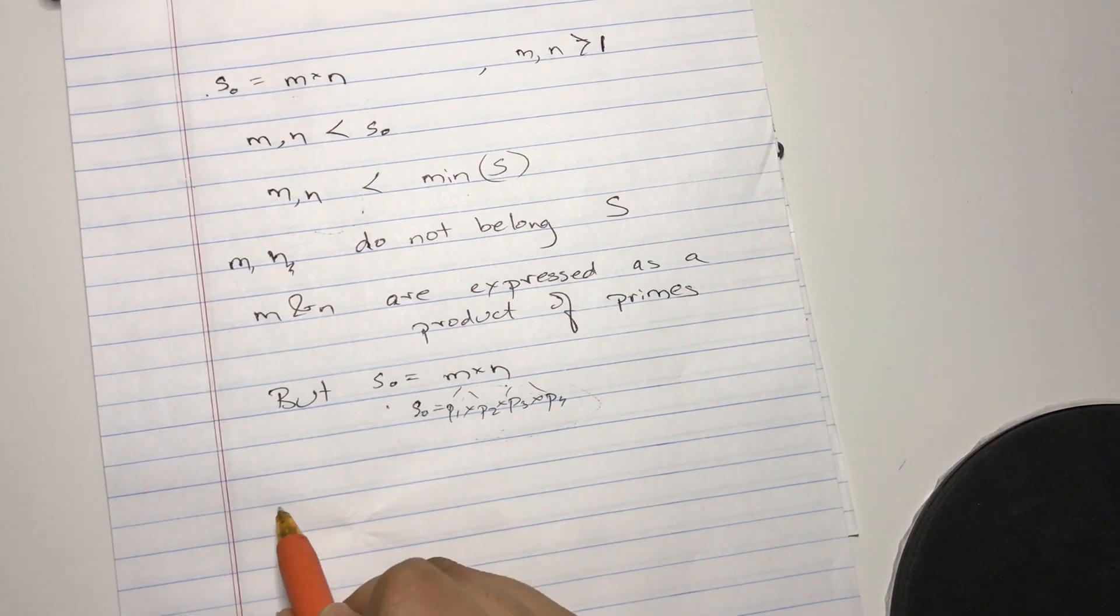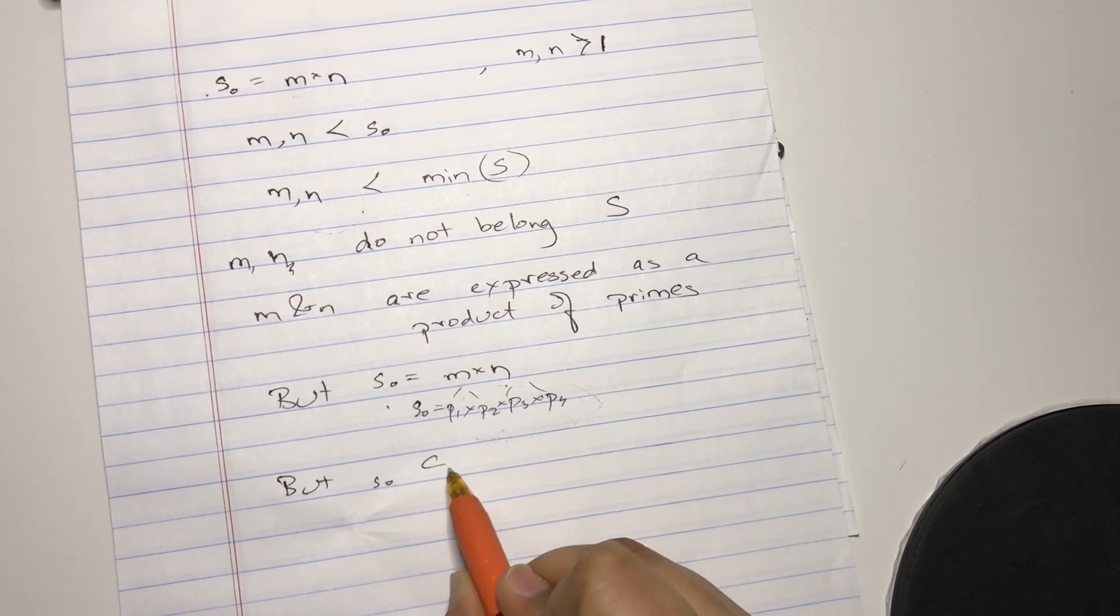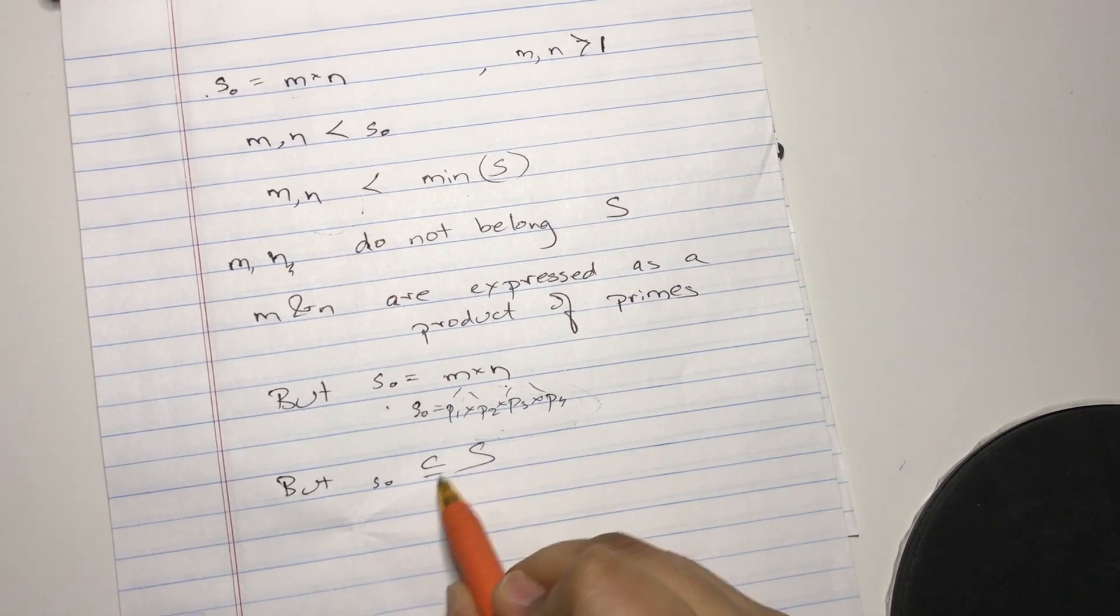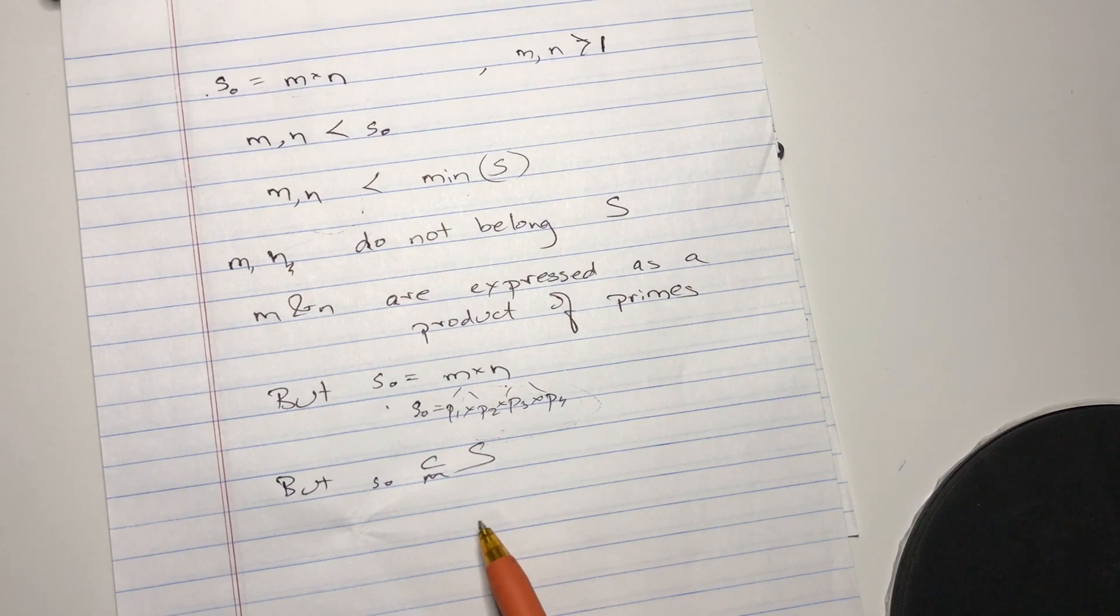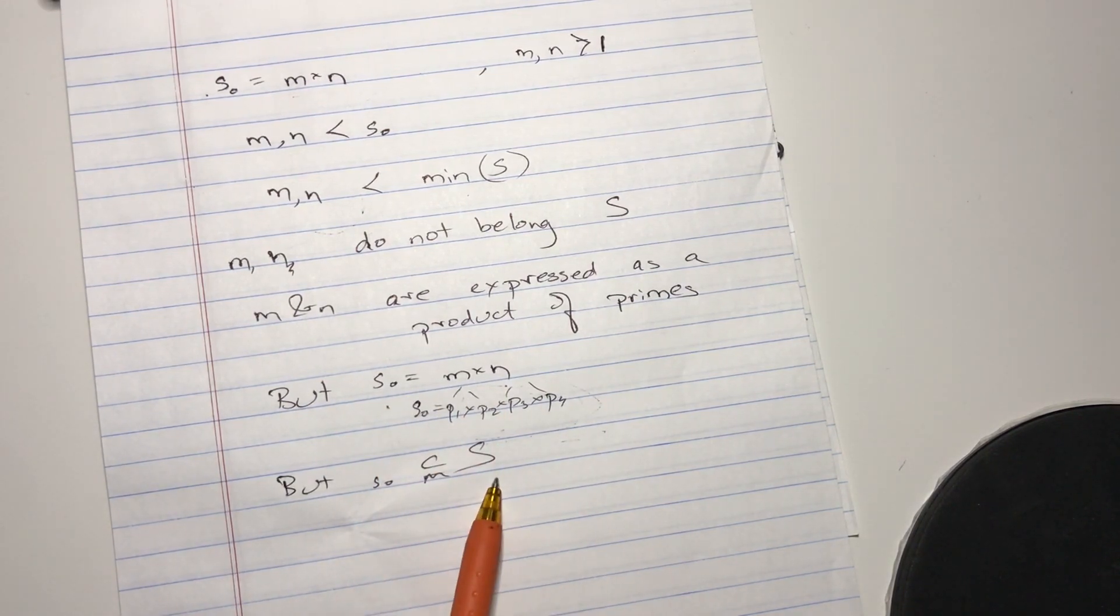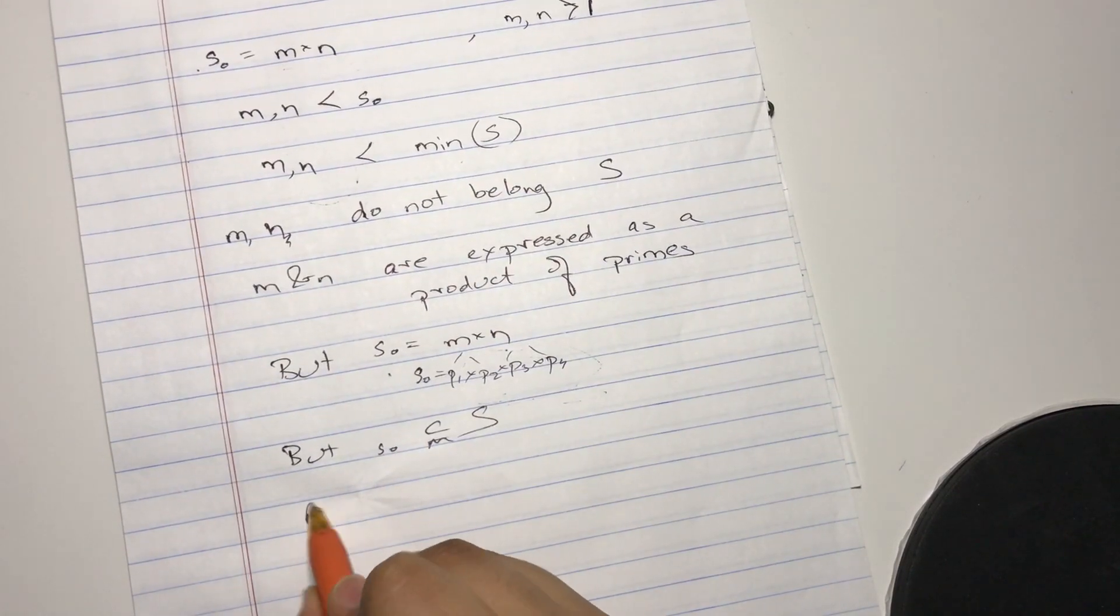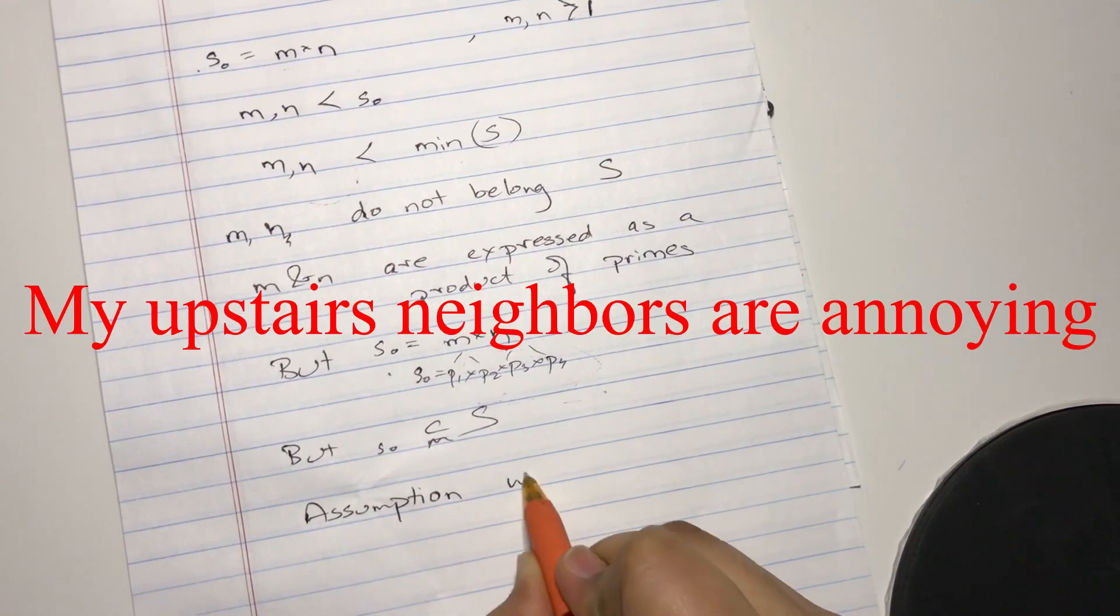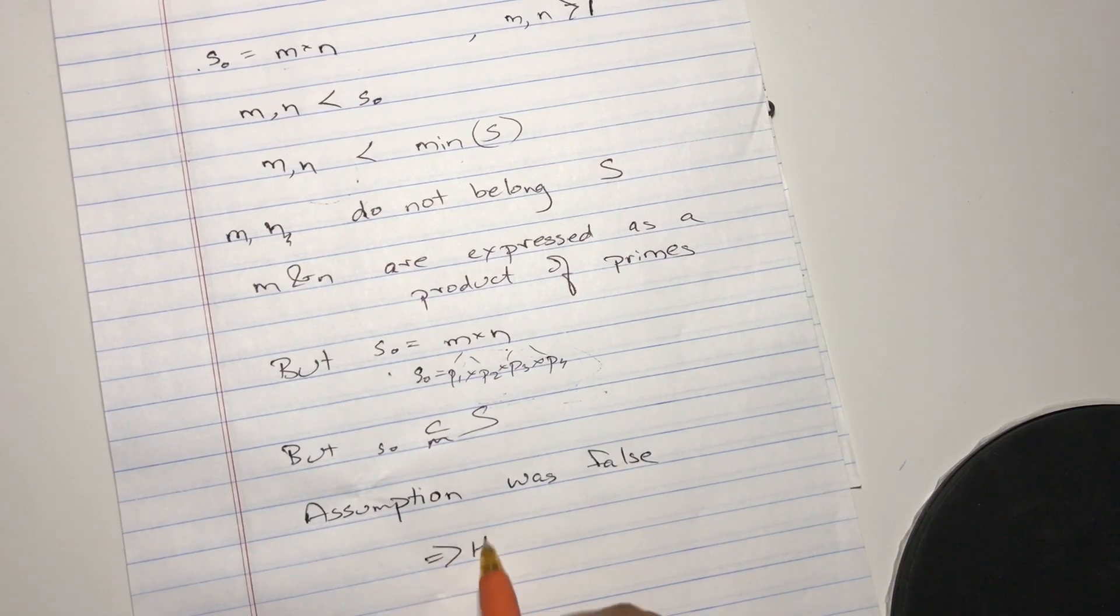But S_0 belongs to the set S. So S_0 can be expressed as a product of primes, but if it belongs to the set S, it cannot be expressed as a product of primes. This makes no sense. That means our assumption was false. And yeah, this is proved, hence proved.